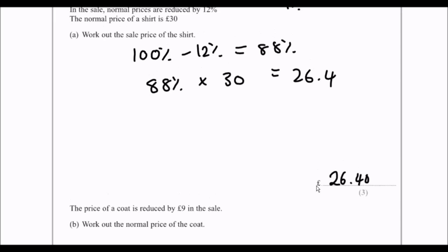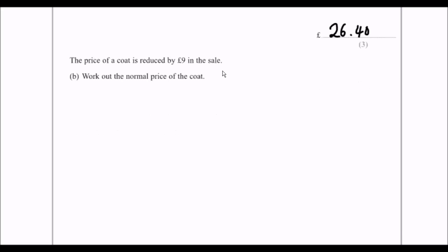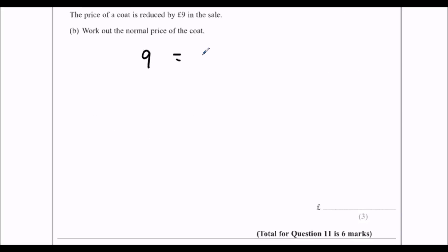The price of a coat is reduced by 12%. So the reduction is 12%, and £9 equals 12%. What's the normal price? So we need to work out what 100% is. If we divide by 12, we'll get 1%.